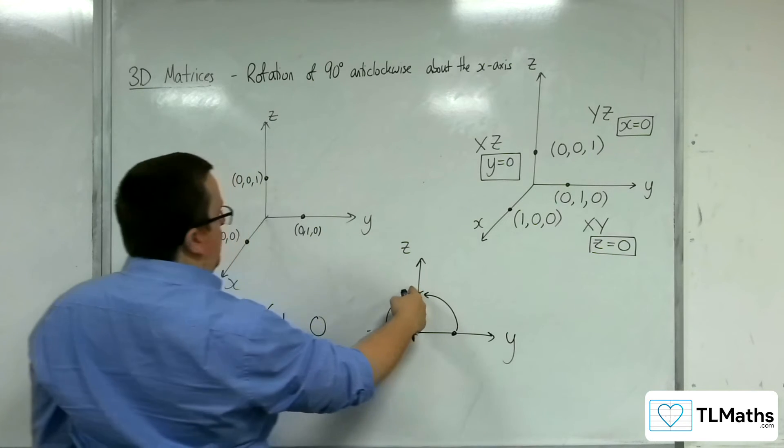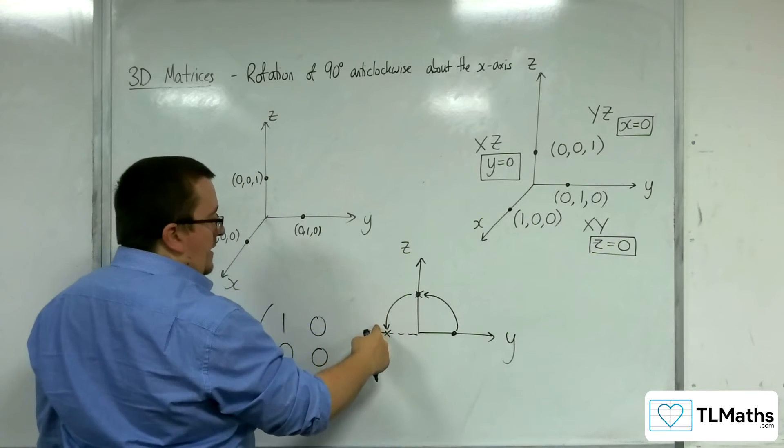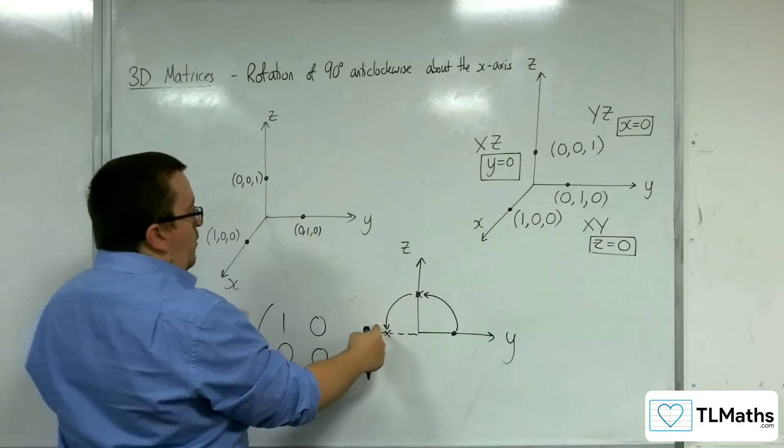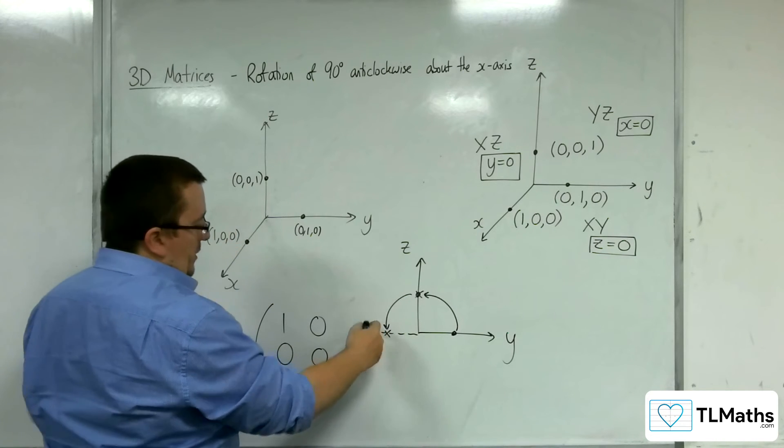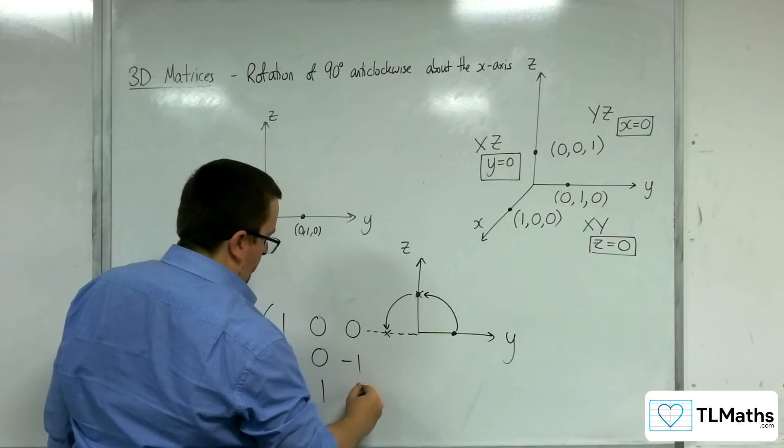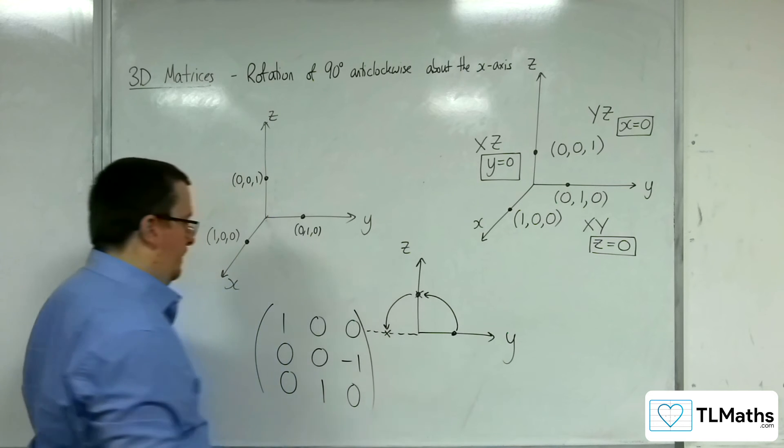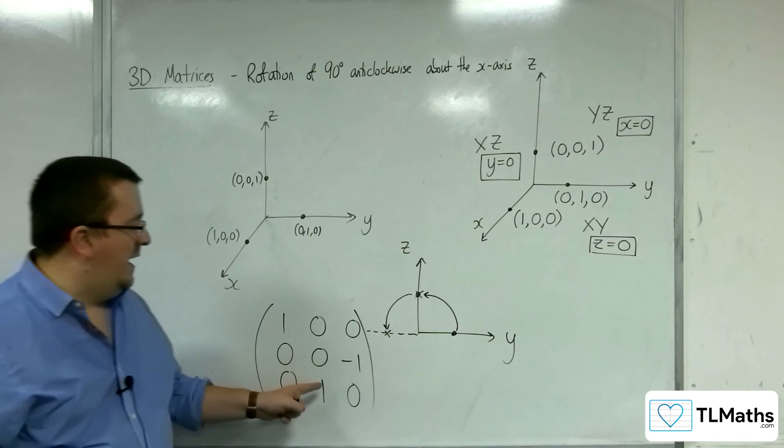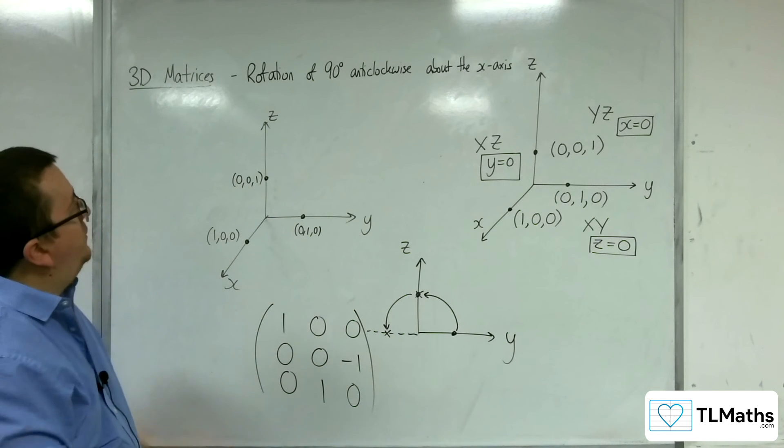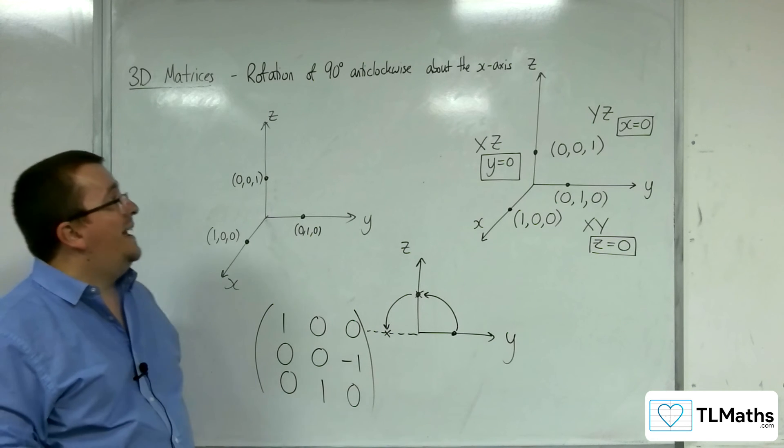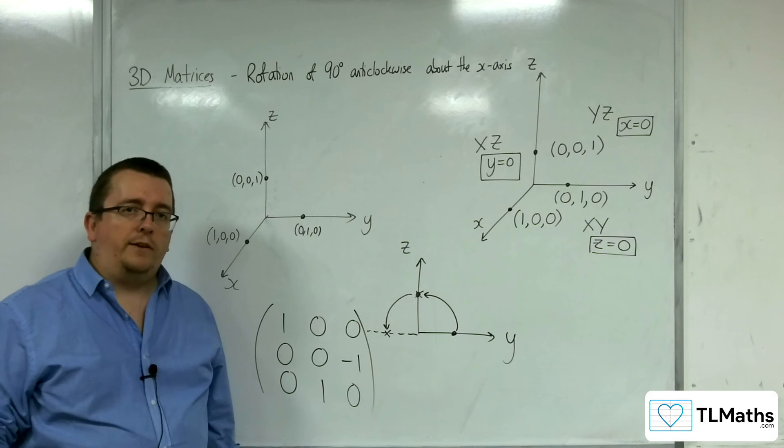And 0, 0, 1 will be mapped here, which will be 0, negative 1, 0. And so that must represent the rotation matrix 90 degrees anticlockwise about the x-axis.